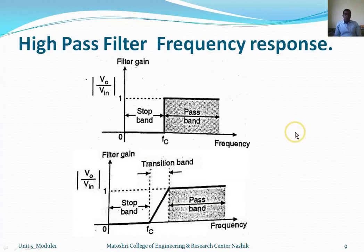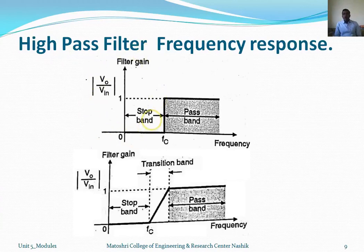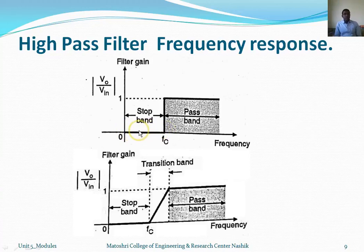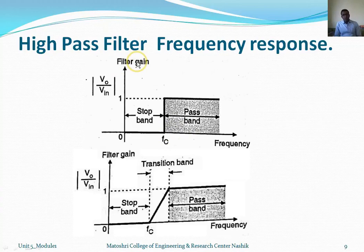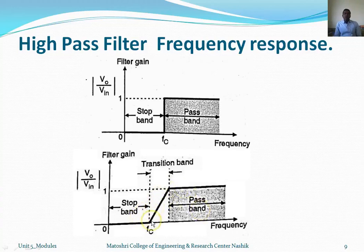The next filter is the high pass filter, which is exactly opposite to the low pass filter. High pass filter, as the name indicates, passes high frequencies — so obviously low frequencies are stopped. The cutoff frequency determines which frequencies are high and which are low. Frequencies less than the cutoff frequency are blocked, and frequencies greater than the cutoff frequency are passed. The first diagram shows the ideal high pass filter frequency response, and the second diagram shows the practical response, where some transition time is required from stop band to pass band.